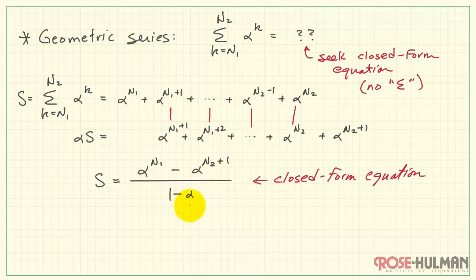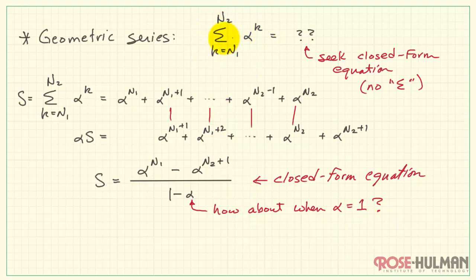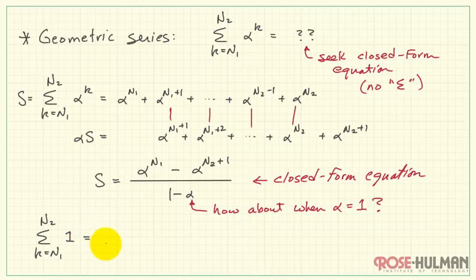Everything looks good except for the case when alpha equals 1. In that case, we would have a divide-by-zero error. To deal with this situation, let's go back to the original geometric series definition with alpha equals 1. Of course, 1 raised to the kth power is always 1, so we are simply adding up 1 running from n1 to n2. Therefore, we have added together n2 minus n1 ones.